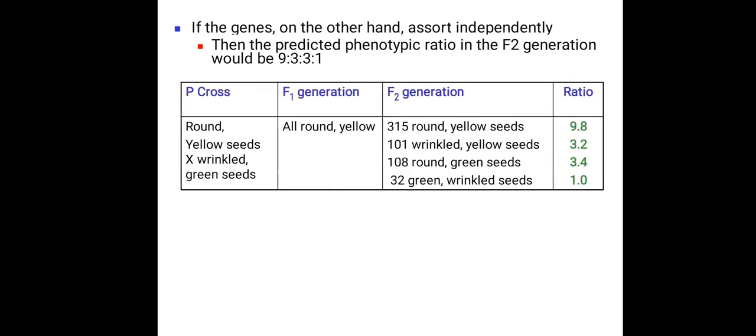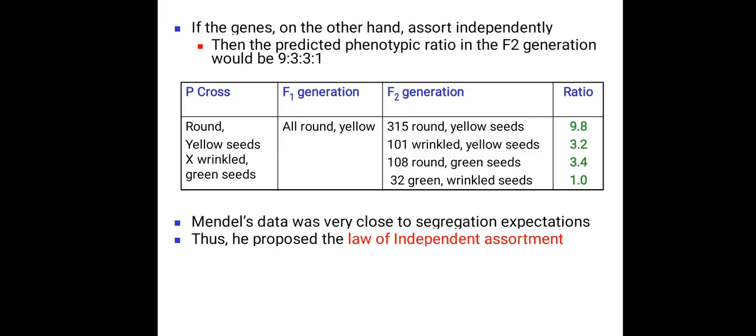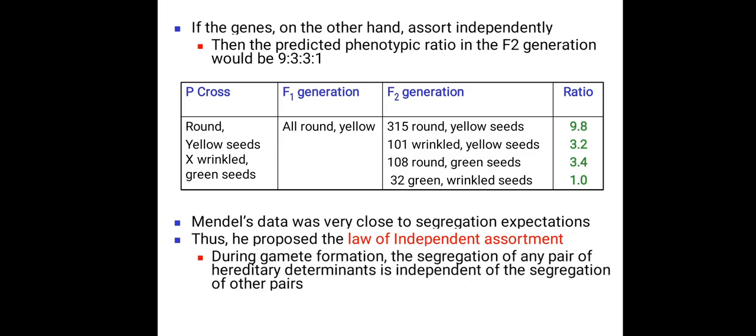If the genes on the other hand assort independently, then the predicted phenotype ratio in the F2 generation would be 9:3:3:1. Here is the determined ratio which Mendel had formed. Mendel's data was very close to the segregation expectations. Thus, he proposed the law of independent assortment, which is during gamete formation, the segregation of any pair of hereditary determinants is independent of the segregation of other pairs.